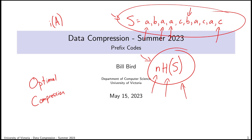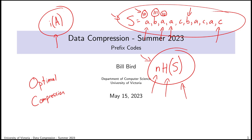I mentioned a fork in the road: do we encode each symbol in a vacuum, giving every symbol its own bit sequence, or do we find some way of mixing symbols together? We're going to take the fork that encodes each symbol separately today. We'll notice that leads to a certain rounding error or inaccuracy — fractional values from information content can't be realized well if every symbol gets its own bit sequence. We'll come back to the other arm of the fork in about five or six lectures.